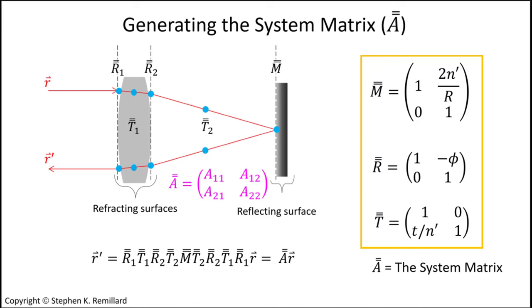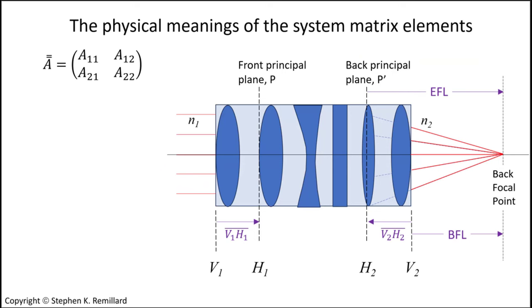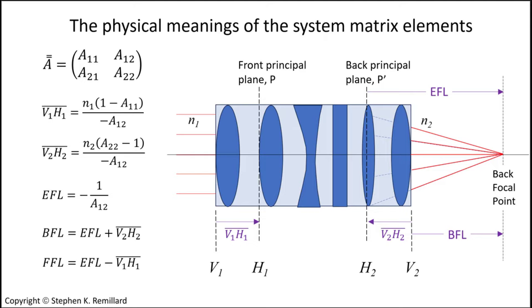These four elements of the system matrix all have physical meanings, one of which I am going to demonstrate to you in just a minute. You can use the system matrix elements to find the front principal plane relative to the vertex of the first element and the back principal plane relative to the vertex of the final element. The effective focal length is minus 1 divided by element A sub 1, 2. With the effective focal length and the principal planes known, the back focal length and the corresponding front focal length can also be computed.